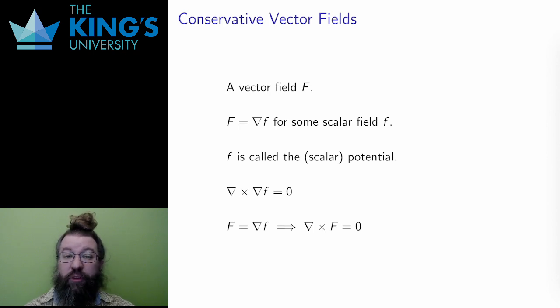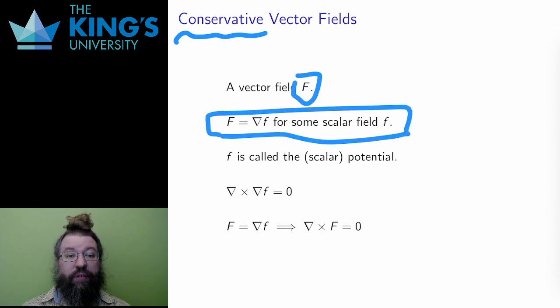There is a name for these vector fields. A vector field, uppercase F, is called conservative if it is the gradient of some scalar field, lowercase f. The lowercase f in this case is called the potential for the conservative vector field, mimicking the discussion of potential energy I just did for forces. Later, we'll have different kinds of potentials, so sometimes this is called the scalar potential to be more specific, but usually just saying potential is fine.